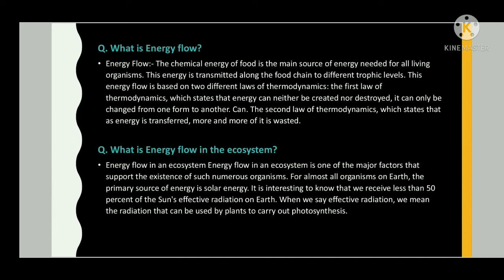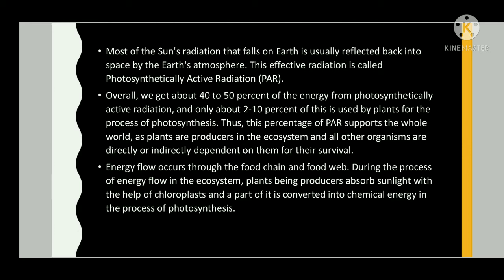Energy flow in an ecosystem is one of the major factors that supports the existence of numerous organisms. For almost all organisms on earth, the primary source of energy is solar energy. We receive less than 50 percent of the sun's effective radiation on earth. Effective radiation means the radiation that can be used by plants to carry out photosynthesis. Most of the sun's radiation that falls on earth is reflected back into space by earth's atmosphere.